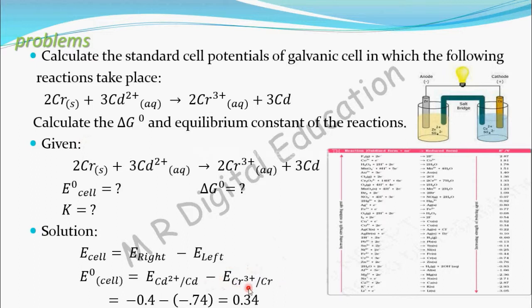These values are not given; you have to consult the standard reduction potential table. From the table, the reduction potential of cadmium is −0.40 V, and the reduction potential of chromium is −0.74 V. Simplifying: E naught cell = −0.40 − (−0.74) = 0.34 V. This is the standard cell potential of the galvanic cell.